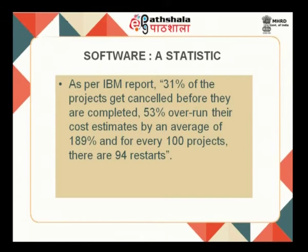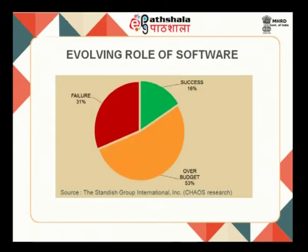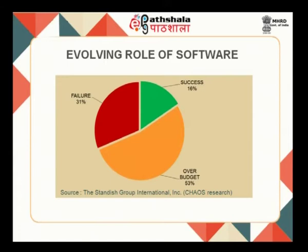As per IBM's report, 31 percent of projects get cancelled before they are completed. 53 percent overrun their cost estimates by an average of 189 percent, and for every 100 projects there are 94 restarts. Looking at this pie chart, the failure rate is 31 percent, the success rate is only 16 percent, and 53 percent of projects overrun their budget by 189 percent.